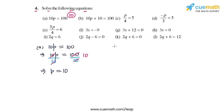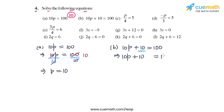In part b the equation is 10p plus 10 equal to 100. First we will get rid of the 10 by subtracting 10 on both sides. The original LHS is 10p plus 10, the original RHS is 100, and we subtract 10 on both sides. These 10s cancel out and on the RHS we have 100 minus 10 which equals 90, so we get 10p on the LHS and 90 on the RHS.